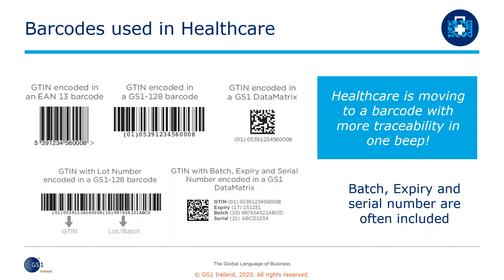Next we have the GS1-128 barcode, commonly seen on some healthcare items. The GTIN looks slightly different than in the EAN-13. It starts with a zero-one in brackets — this is what we call an application identifier. The zero-one lets the scanning system know that it is a GTIN, because there may be additional information encoded in the barcode. There is also a zero added after the zero-one at the start of the GTIN, which does not appear in the EAN-13. In this barcode type the GTIN must be 14 digits long, so where it is shorter, leading zeros are added as filler characters that do not change the GTIN.